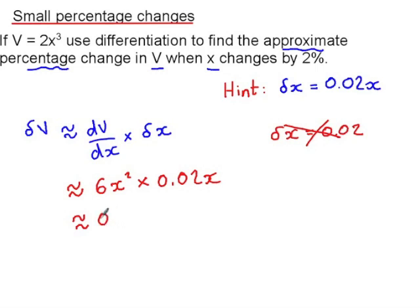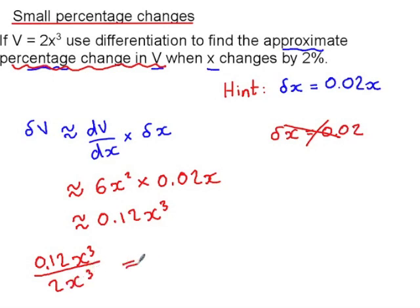So our small change in V is dV by dx which is 6x squared multiplied by 0.02x which simplifies to 0.12x cubed. And we want this as a percentage change in V, so if V is 2x cubed and we have 0.12x cubed, what is that as a percentage of V? 0.12x cubed as a percentage of 2x cubed is 0.06 which is 6%.